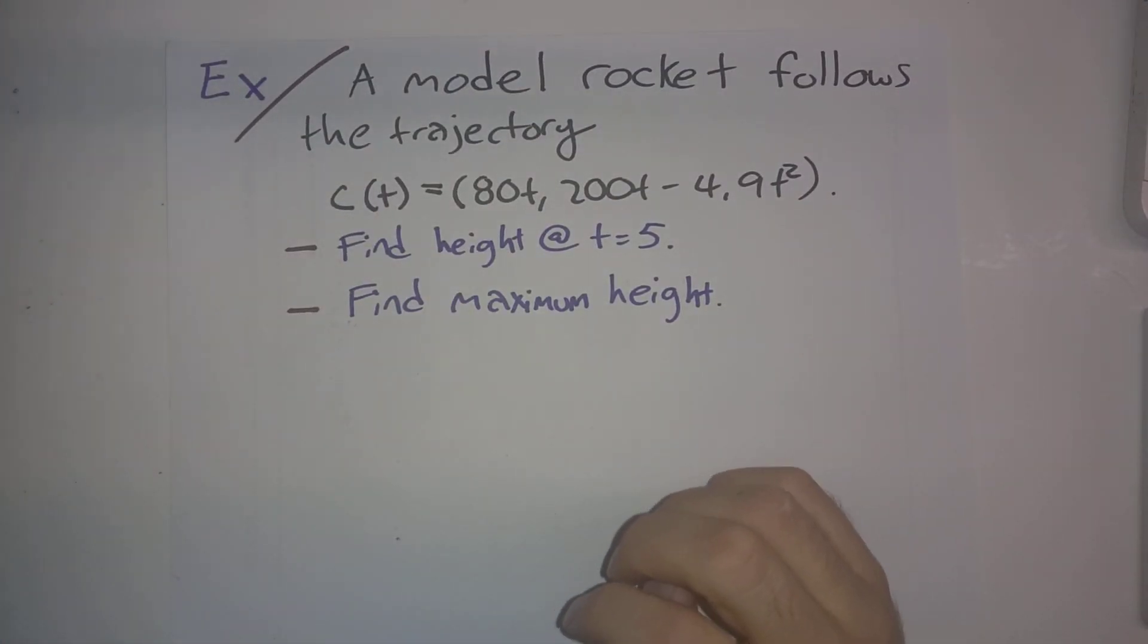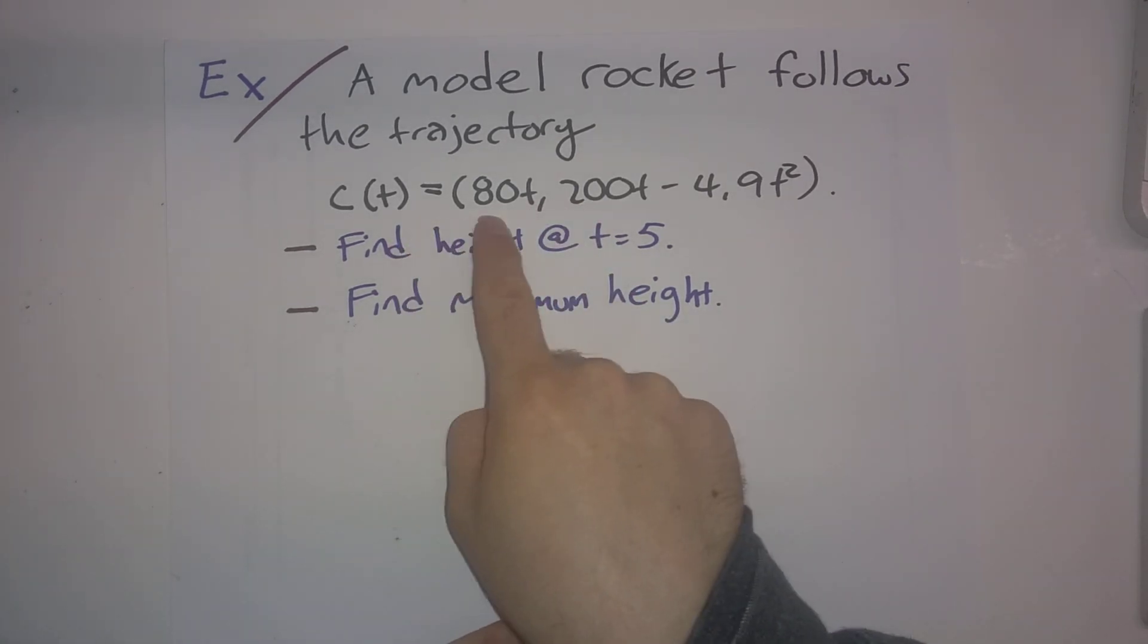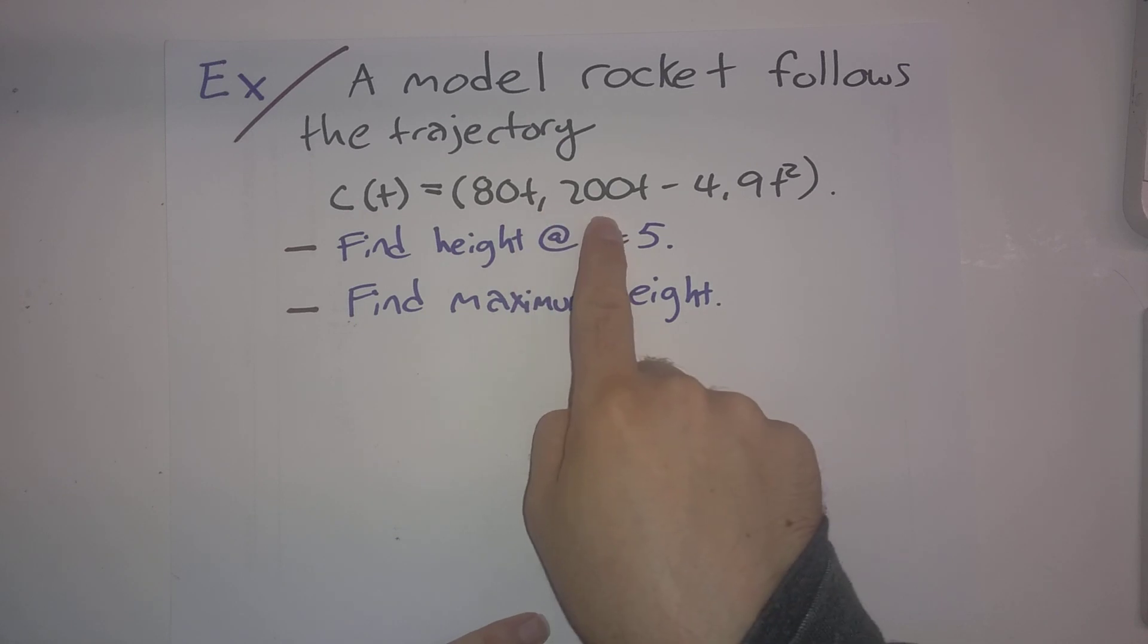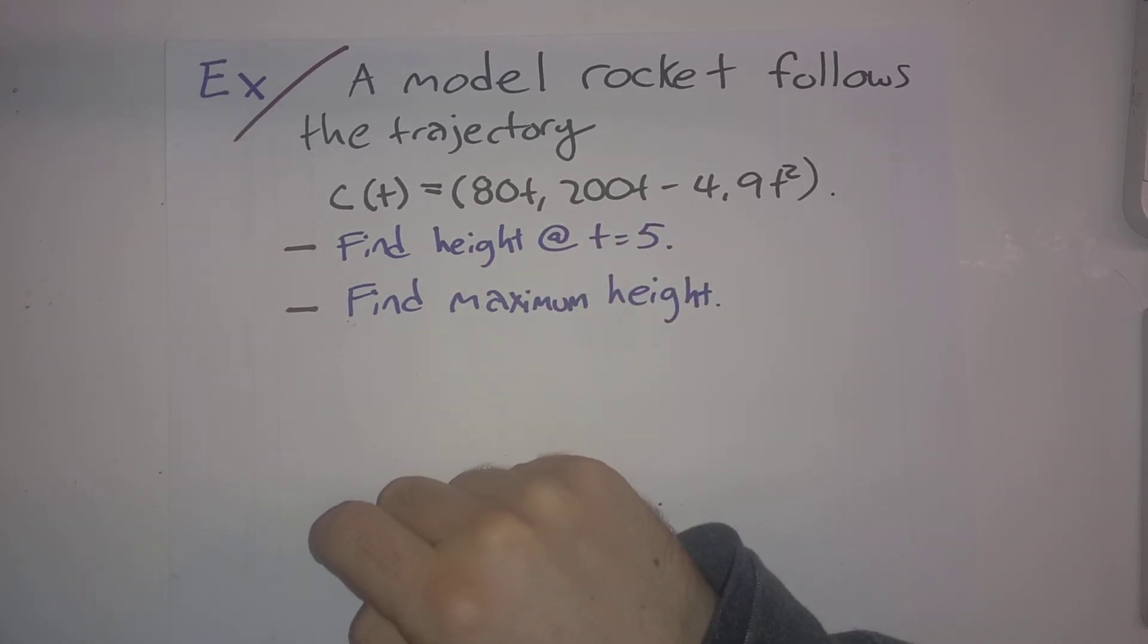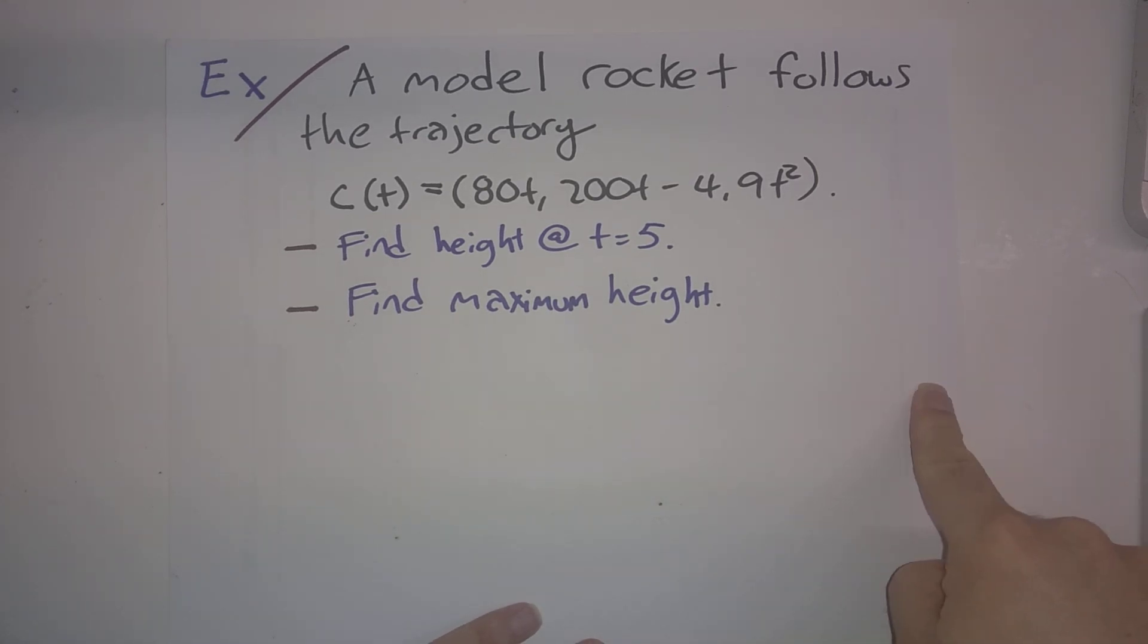Here's another calculation we can do. My rocket follows the trajectory c(t) = (80t, 200t - 4.9t²). And so this traces out some kind of parabola.